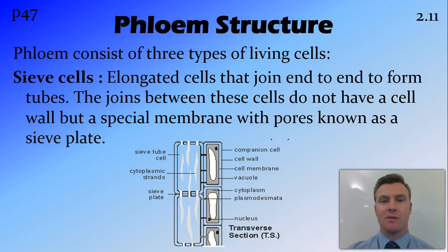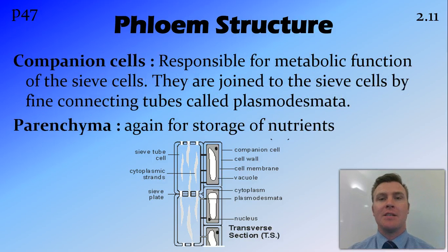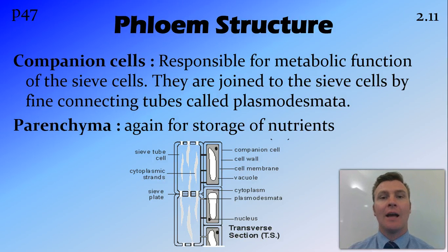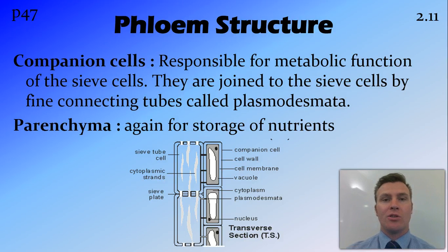Because the phloem cells — and in particular the sieve cells — are alive, they need to carry out metabolic functions like respiration. However, their primary job is moving things around, so they're specialised for that. What they have instead are companion cells that sit just outside them, where most of the metabolic function occurs. The companion cells pump products of that metabolism, like ATP, into the sieve cells to keep them alive. They do this through minute connecting tubes called plasmodesmata. The parenchyma cells around the phloem are used for nutrient storage.